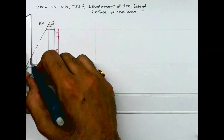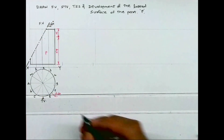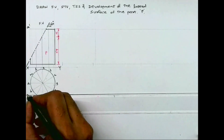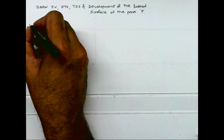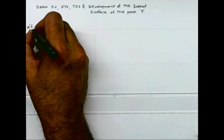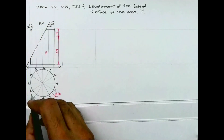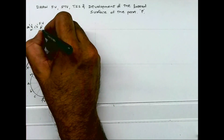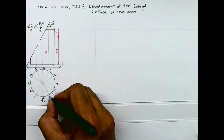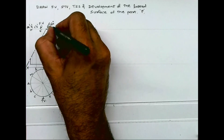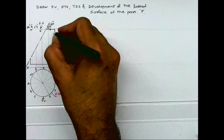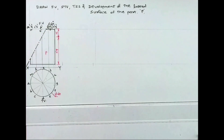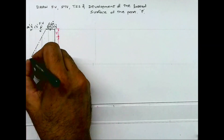I'll just extend all these lines up. This is A dash, B and M, B dash, M dash, E dash, L dash, D dash, K dash, E dash, J dash, F dash, H dash, and G dash.